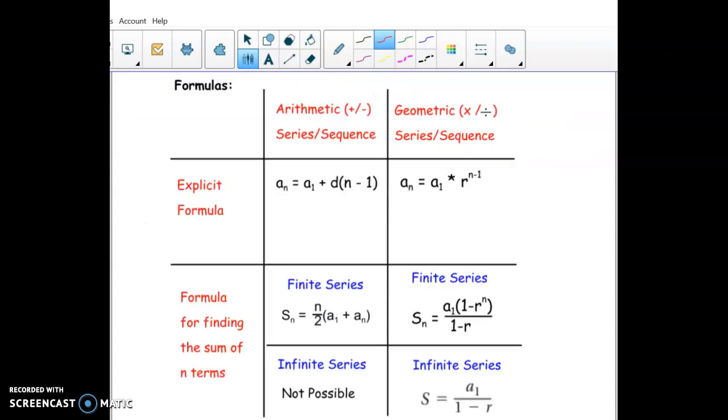In order to find the sum we just have to figure out which formula to use. For this one, it's an infinite series and geometric, so that's going to be our formula: a1 over 1 minus r.